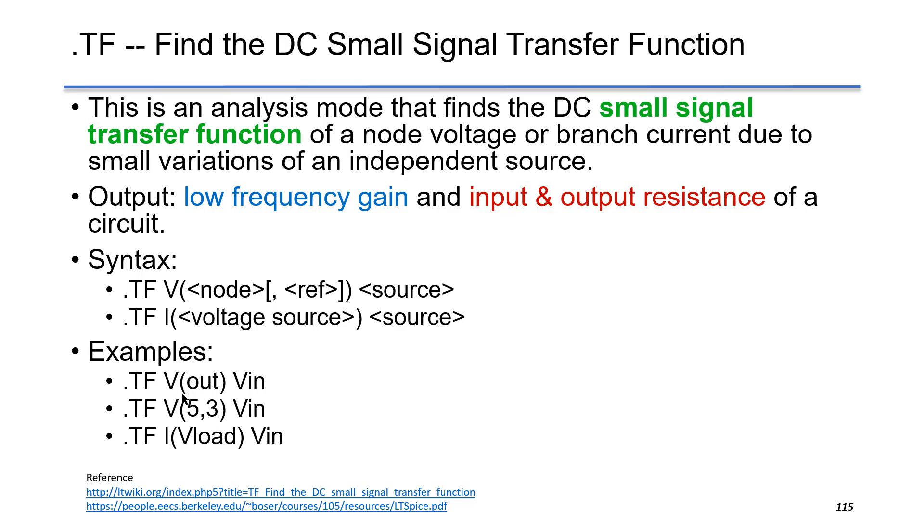The syntax is .TF followed by voltage or current as output and the independent source. For example, .TF Vout VIn means the DC gain of Vout due to small variation in VIn.